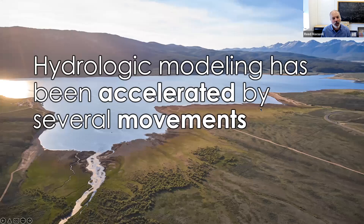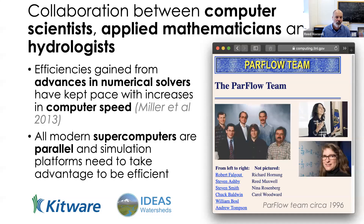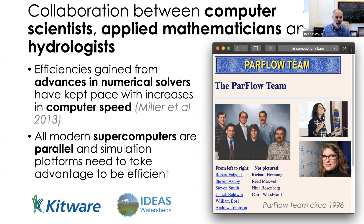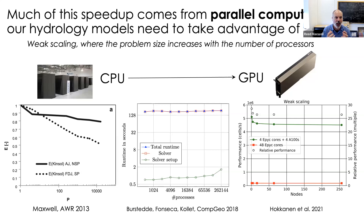Hydrologic modeling has been accelerated by several movements. First is collaboration between computer scientists, applied mathematicians, and hydrologists. Our efficiencies gained from numerical solvers have kept pace with increases in computer speed — we're not using the same applied mathematics approaches from the 1960s. Second, all modern supercomputers are parallel. This incredible advancement in computing speed has been as much due to massive parallelization that happened in the 1990s as it has been advancement on single cores. Our hydrologic models need to take advantage of this.